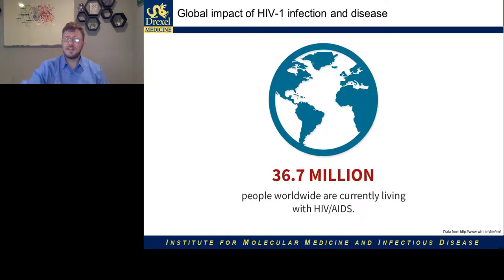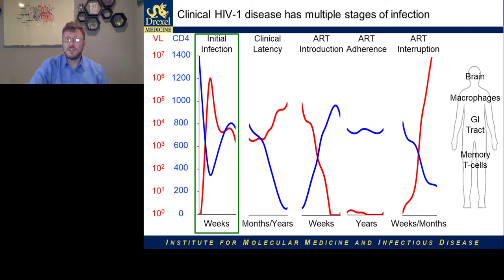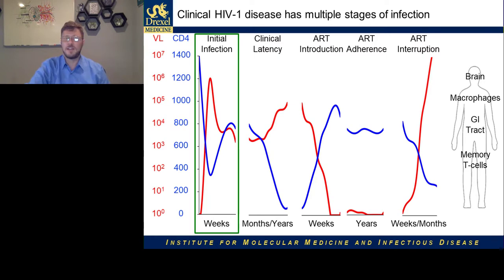I want to do this in the context of HIV infection, which currently infects roughly 36 million people across the world. HIV infection is characterized by two main biomarkers: the viral load, or how much virus is circulating from the patient, and the white blood cell count, or the CD4-positive cells. During the initial infection, the viral load will rapidly increase and the CD4 count will decrease, because those are the cells that HIV is actually infecting and destroying.